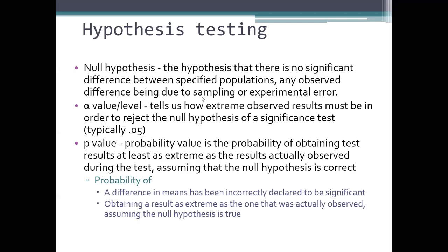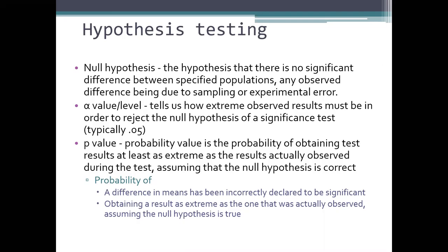Hypothesis testing: the null hypothesis is that there is no significant difference between the specified populations — any observed difference is due to sampling or experimental error. If we're doing a study on COVID comparing aerobic exercise to percussive therapy, the null hypothesis would be that there's no difference between those. The alpha value tells us how extreme observed results must be in order to reject the null hypothesis — typically 0.05 or 5%.